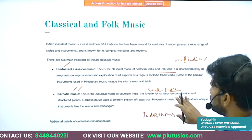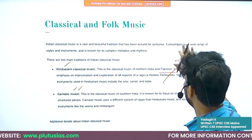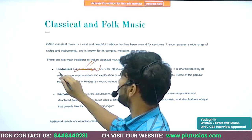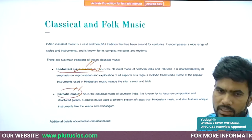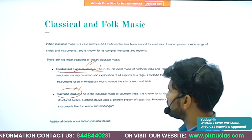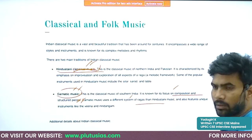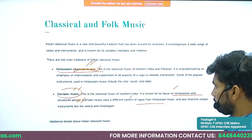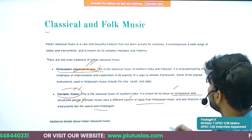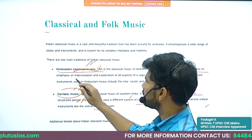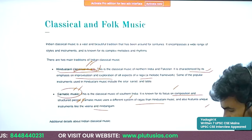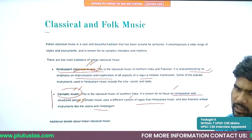Carnatic music is especially associated with south India. There is more scope for experimentation in Hindustani classical music, whereas Carnatic music is very strict with little chance for experiment. Carnatic music is known for its focus on composition and structured pieces, and uses a different system of ragas. It also features unique instruments like veena and mridangam.